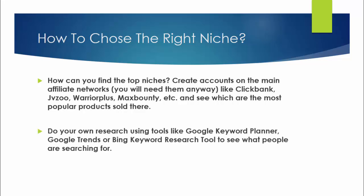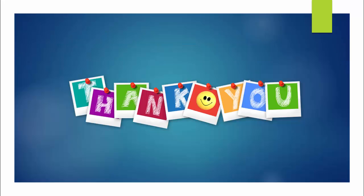Do your own research using tools like Google Keyword Planner, Google Trends, or the Bing Keyword Research Tool to see what people are searching for. Besides researching on affiliate networks — looking at top-selling offers and identifying their niche or sub-niche — you can also do more research with Google Keyword Planner, which shows you what people are searching for on Google, the top performing keywords in different niches, as well as Google Trends or Bing Keyword Research. These are the principles of finding a relevant, good-selling niche and choosing the right niche.